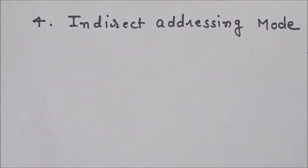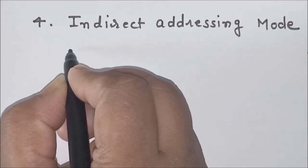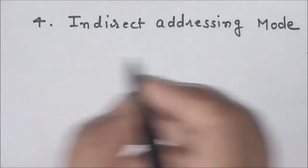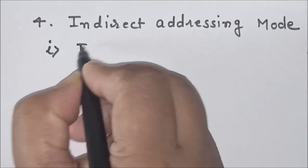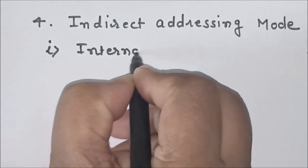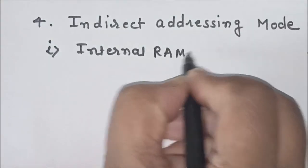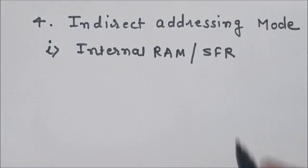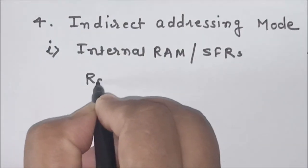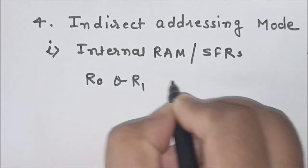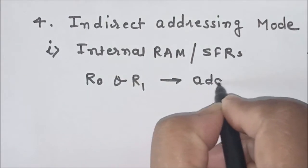the address of internal RAM or SFRs are not directly given in the instruction, but they are stored in registers, and those registers are used as a pointer to a memory location. Only two registers are used to store the internal RAM address. So this indirect addressing mode, first we'll discuss related to internal RAM and SFRs, where only R0 and R1 are used to store the address.